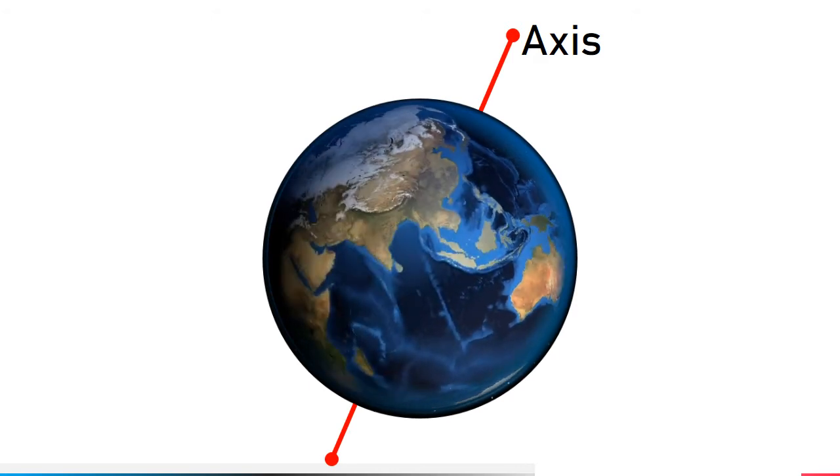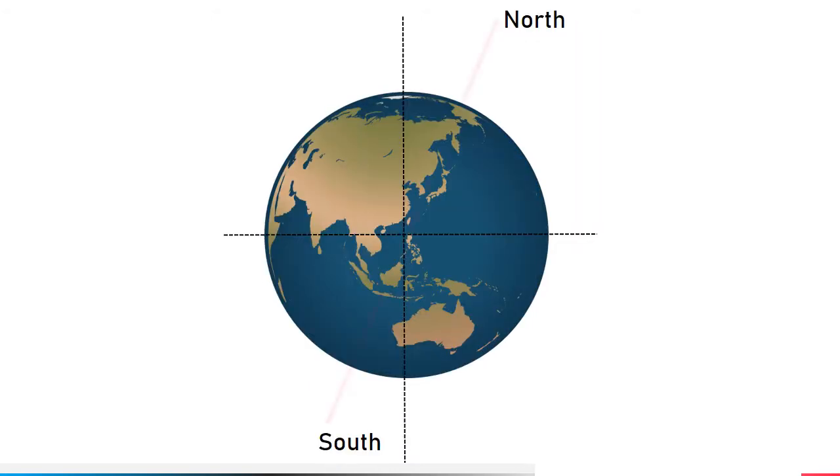Earth's axis is not perpendicular, it has an axial tilt. Earth's axial tilt is about 23.5 degrees. Due to this tilt, the sun shines on different places at different angles throughout the year.